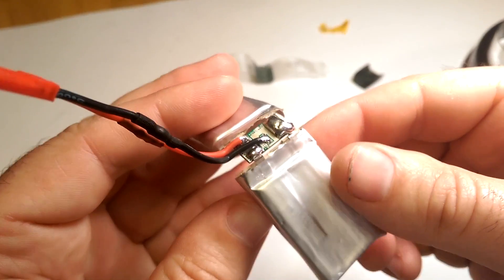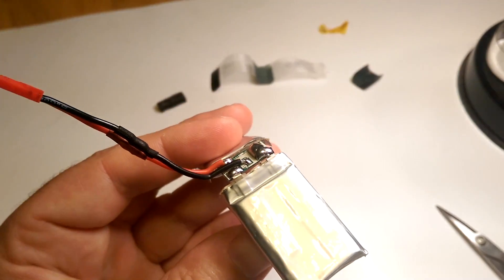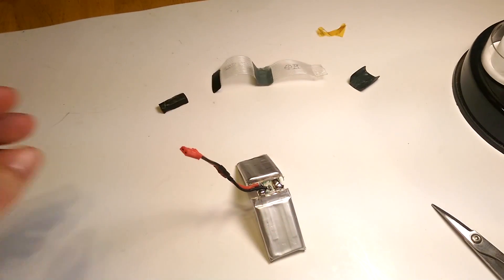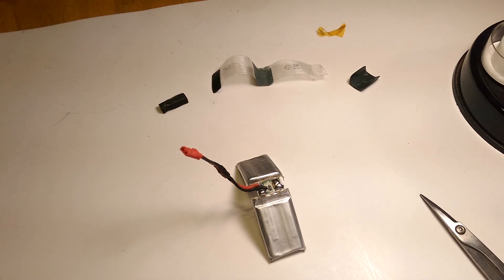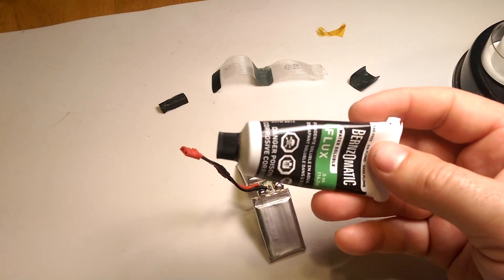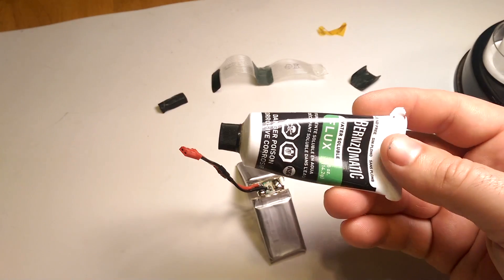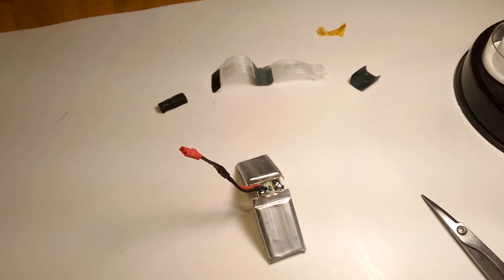So you get your soldering iron. Get that guy hot. I'm going to put this down for a second. I use a little bit of flux. I use this flux paste. You can get it at any hardware store. It's just to kind of help the solder stick.